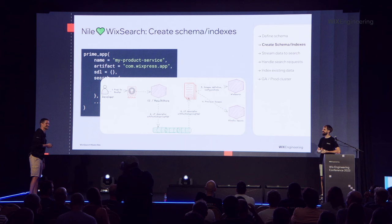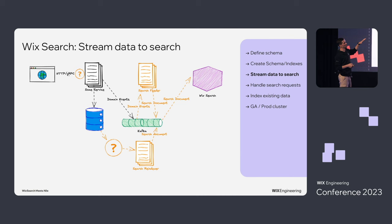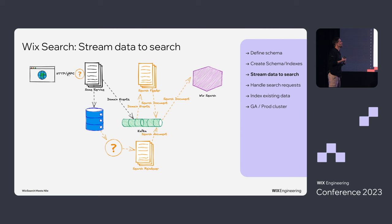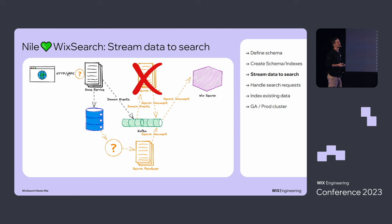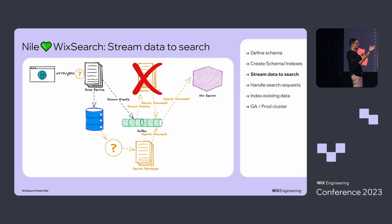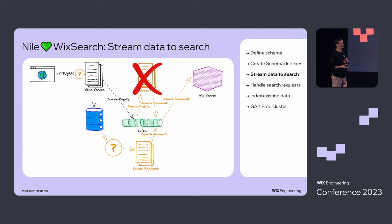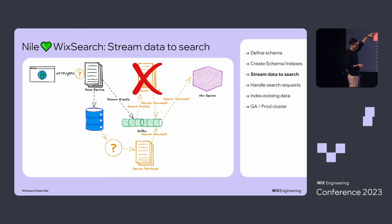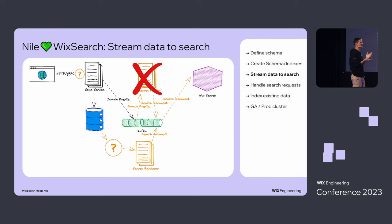For search integration, developers previously needed to create a search feeder artifact — some mapping code. But now, given there is no separation between the search schema and the API schema, this is not necessary. Wix Search listens on your domain events, has the mapping from its schema to your API, does the mapping, and indexes documents for you. When you're talking about tens or hundreds of integrations, this is something you don't need to write or test — which is pretty neat.